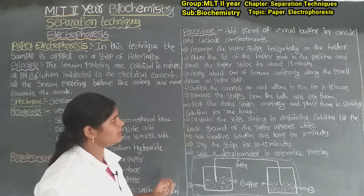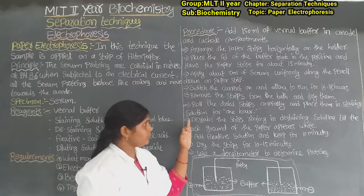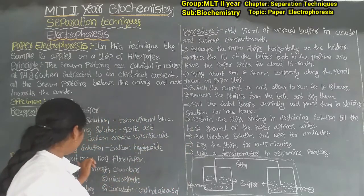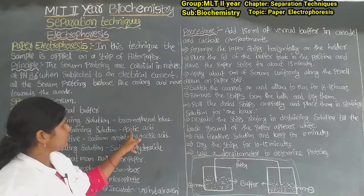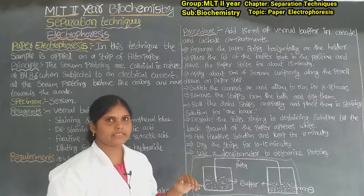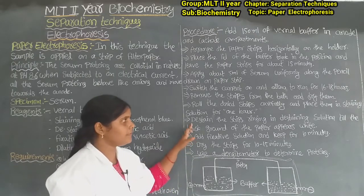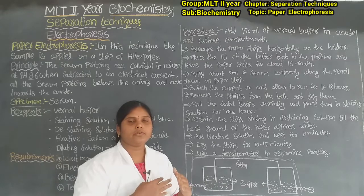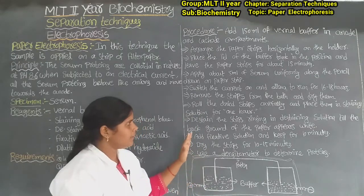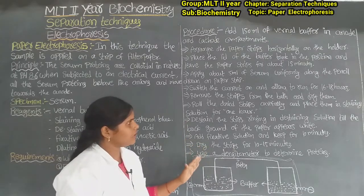Next, de-stain the strips by rinsing in de-staining solution until the background of the paper appears white. Then add the fixative solution and keep it for 10 minutes. The fixative solution used is sodium acetate.